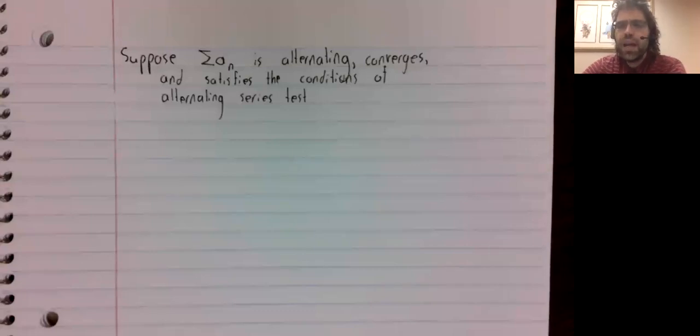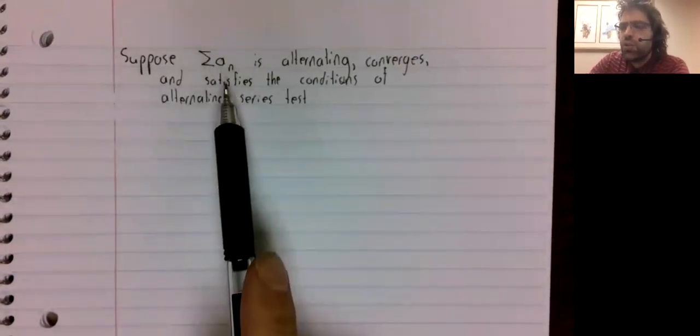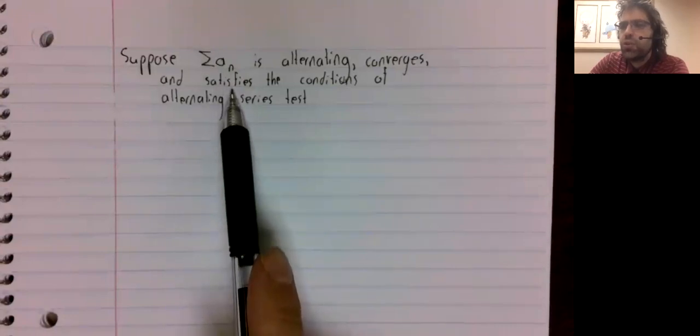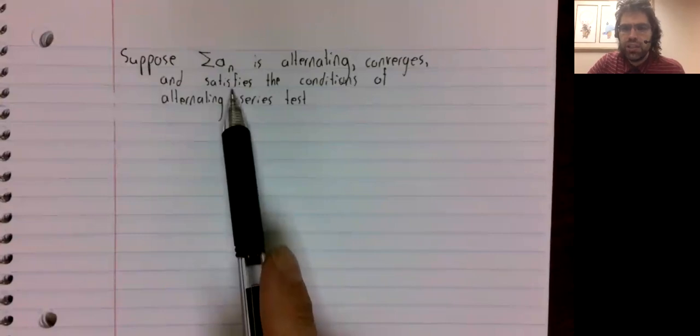Suppose we have a convergent alternating series, and what's more, we can show that it's convergent using the alternating series test.